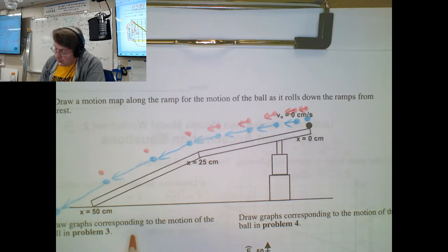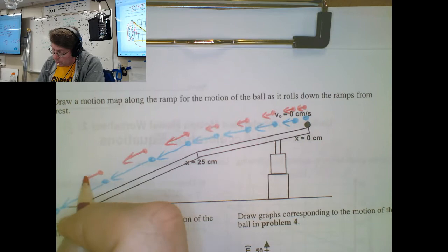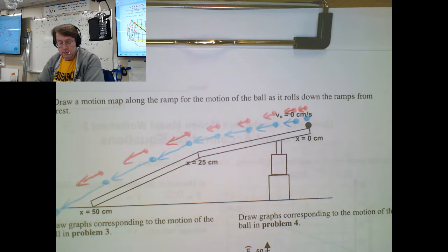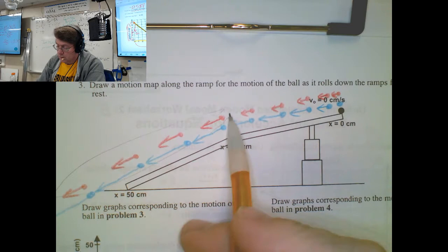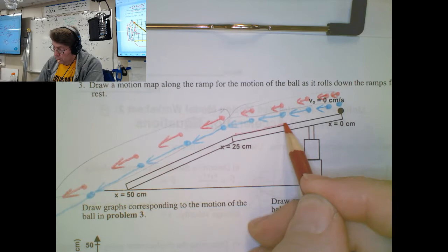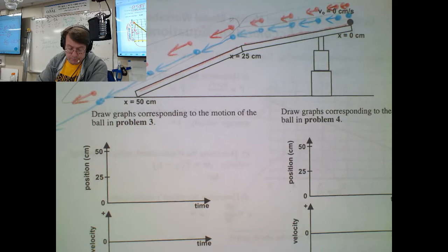And then for this part of the ramp, our accelerations are bigger, like twice as big. They don't change. They're just bigger compared to the first set. So they changed relative to the first set. But these are all the same. And these are all the same because the angle of the ramp here and the angle of the ramp here. Okay.